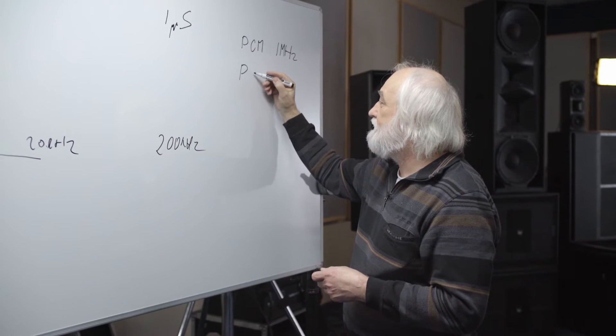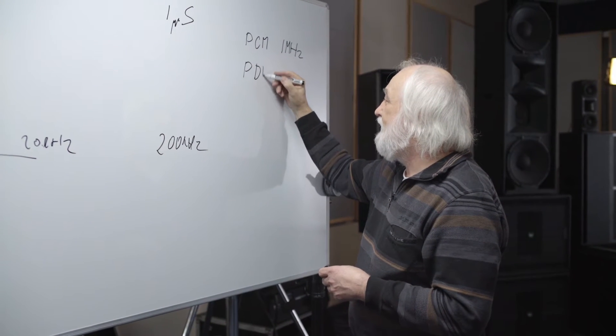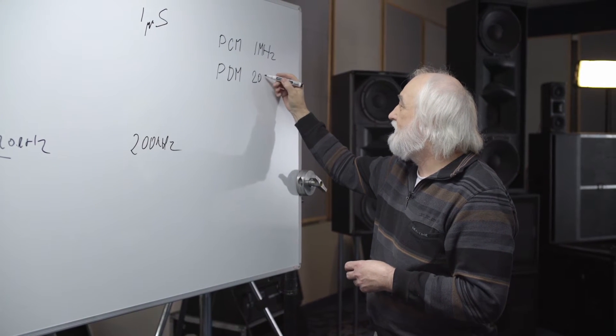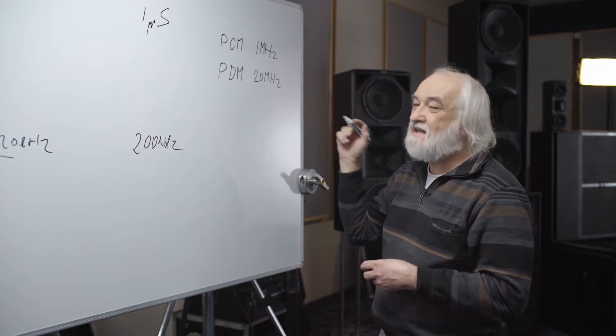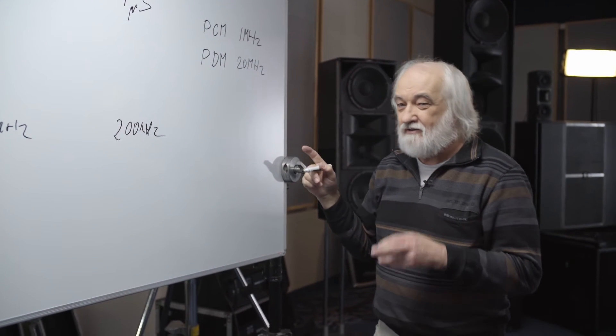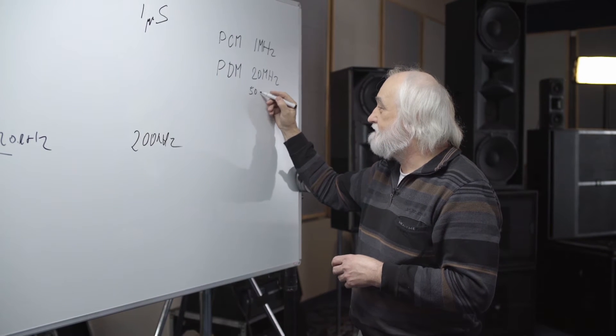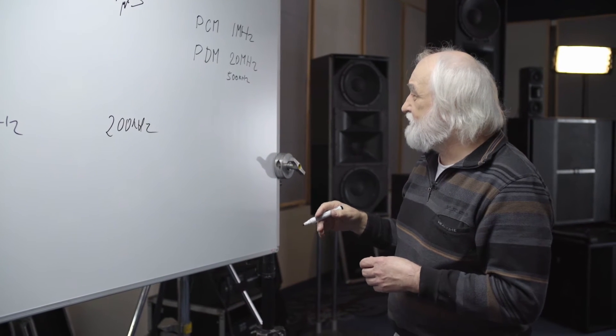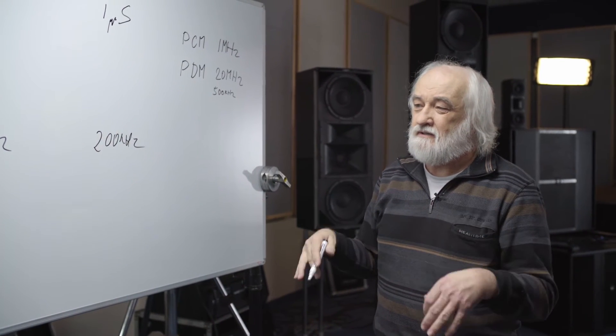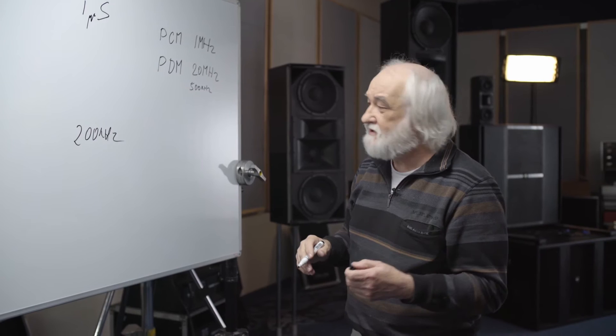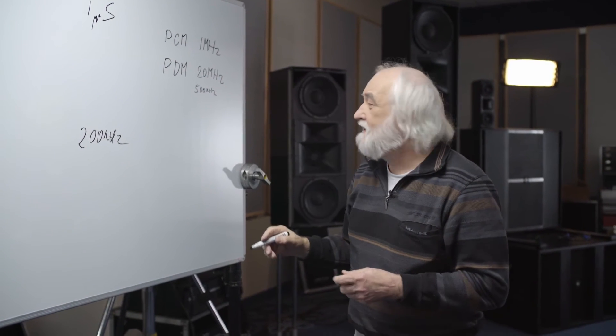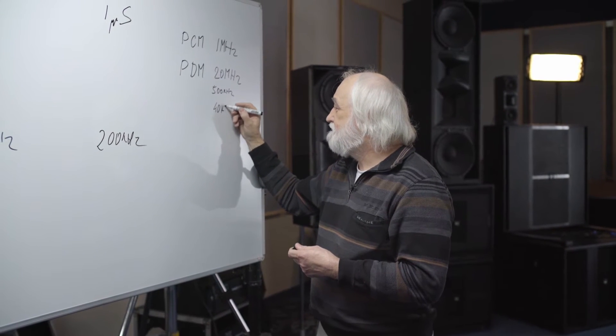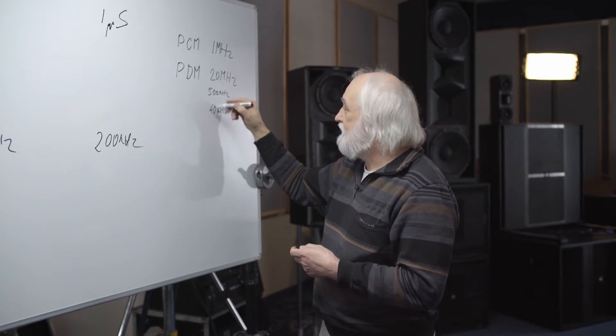At 20 MHz PDM. For that reason, we're using the system PDM, pulse density modulation, 20 MHz. But Sigma Delta modulator running at 500 kHz. Which is, when we look at the 96 kHz PCM, they're running at 40 kHz.